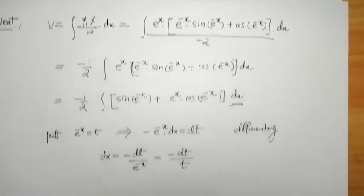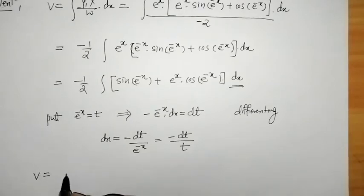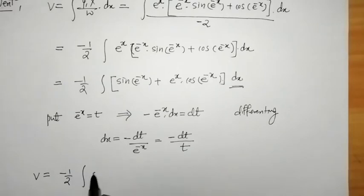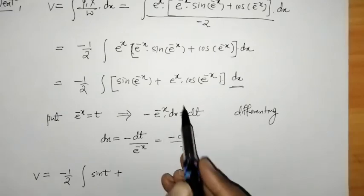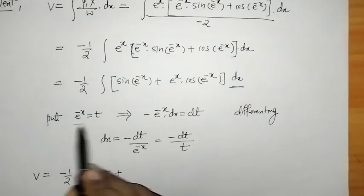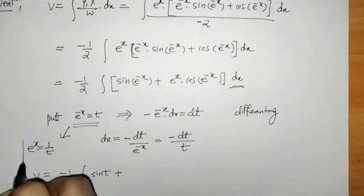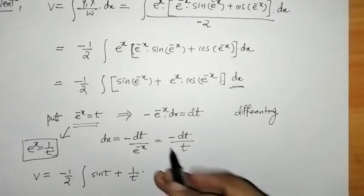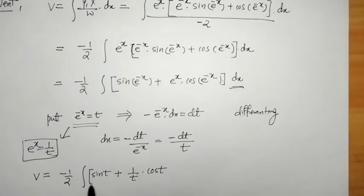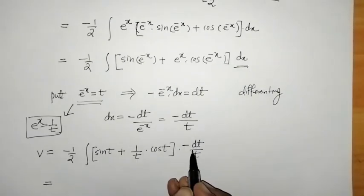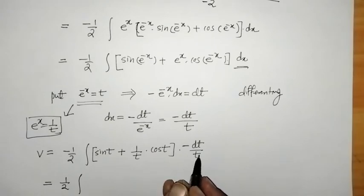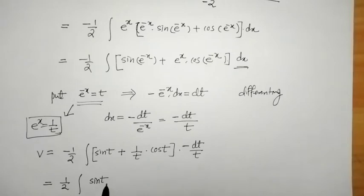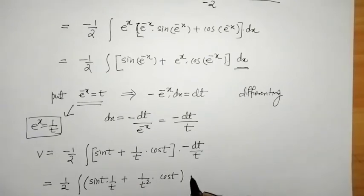Substituting dx in terms of dt, v becomes -1/2 times the integral of [sin(t) + (1/t)*cos(t)] times (-dt/t). Taking the minus sign outside and simplifying gives (1/2) times the integral of [sin(t)/t + cos(t)/t²] with respect to t.